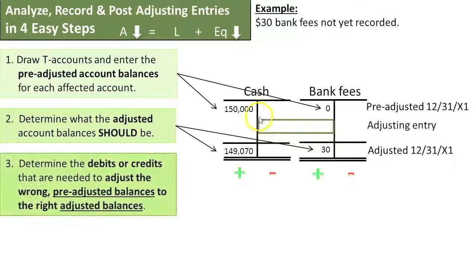Step 3. Determine the debits or credits that are needed to adjust the wrong, pre-adjusted balances, to the right, adjusted balances.